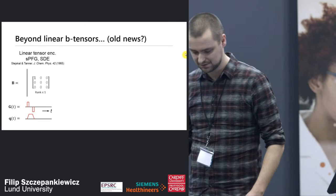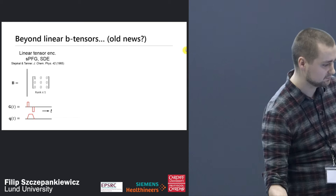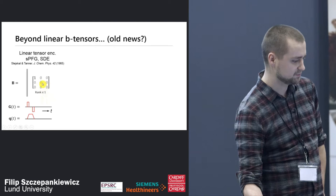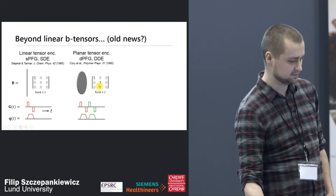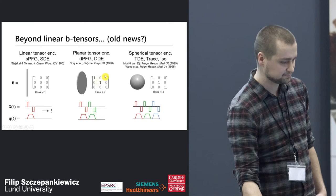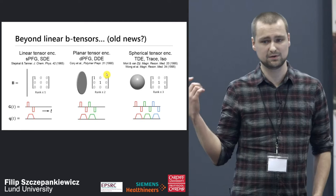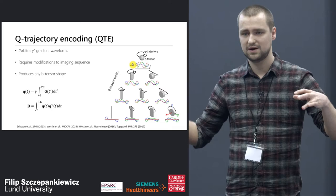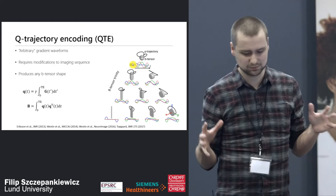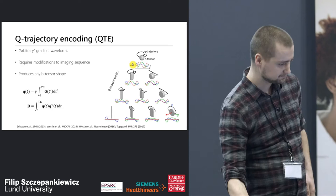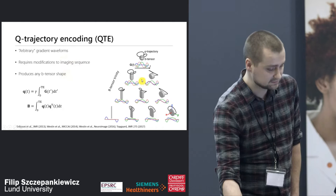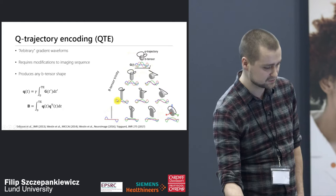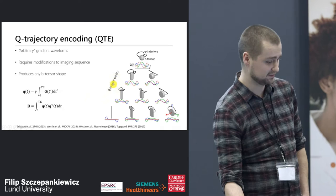Fat B tensors — really anything beyond the linear B tensor — have existed for a while. It began in 1965 with Stejskal and Tanner giving up to rank-1 B tensors. In the 1990s, Cory introduced the double diffusion encoding experiment giving up to rank-2 tensors. Mori and van Zijl, as well as Wong, used spherical B tensors to get fast imaging of mean diffusivity. We do it in a slightly different way — we use arbitrary gradient waveforms and care about what happens in Q space rather than gradient space, which lets us explore the entire space of B tensors from sticks to plates to spheres and anything in between.